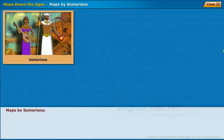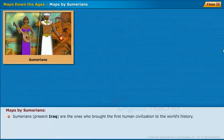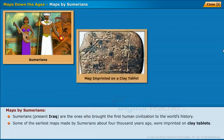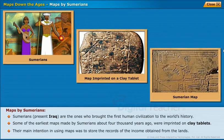Maps by Sumerians. Sumerians are the ones who brought the first human civilization to the world's history. Some of the earliest maps made by Sumerians, about 4,000 years ago, were imprinted on clay tablets. Their main intention in using maps was to store the records of the income obtained from the lands.